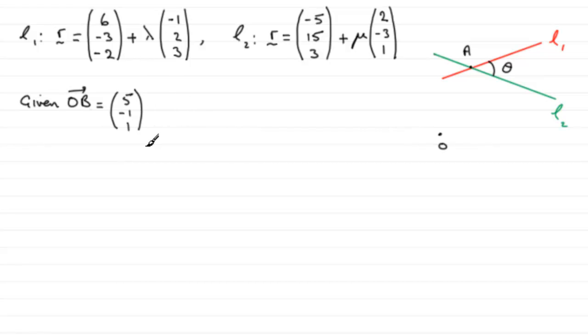So clearly, lambda equals 1. So you could say that when lambda equals 1, you get the position vector r equals. And I would show some kind of working for this to show that I can get it. So it's going to be 1 times minus 1, 2, 3. And that gives us what we want. That's 5, minus 1, and 1. Therefore, we can see that B lies on L1.